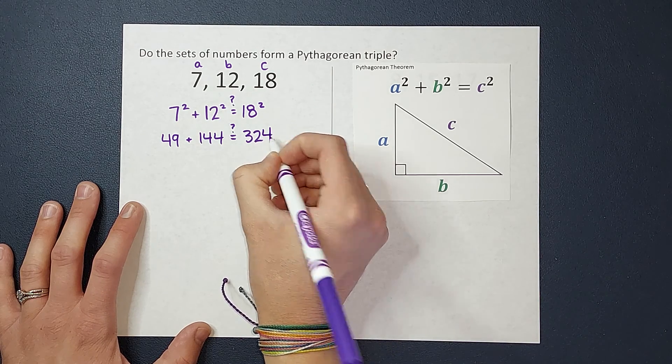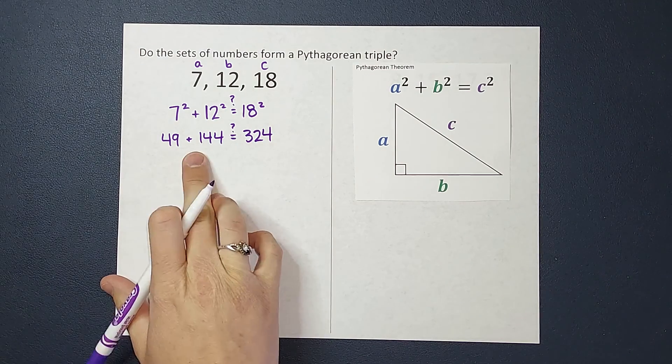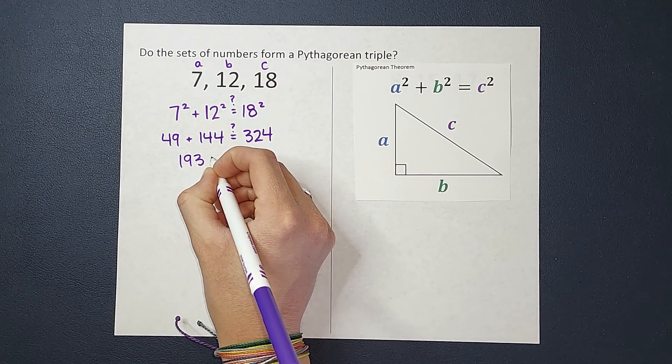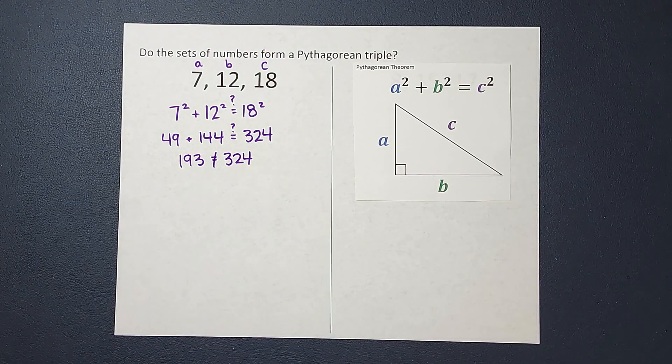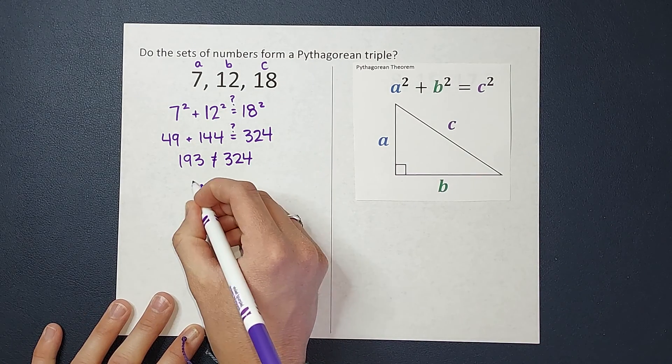And we're seeing if that is equal to 18 squared, which gives me 324. Not looking so equal, but let's make sure. 49 plus 144 gives me 193. And last I checked, that is not equal. So is this a Pythagorean triple? No.